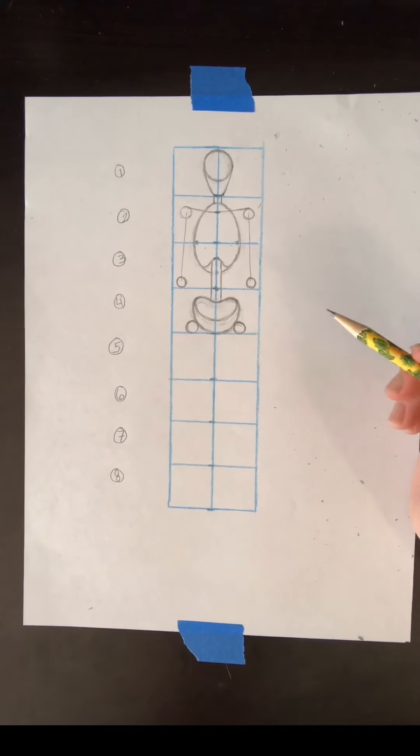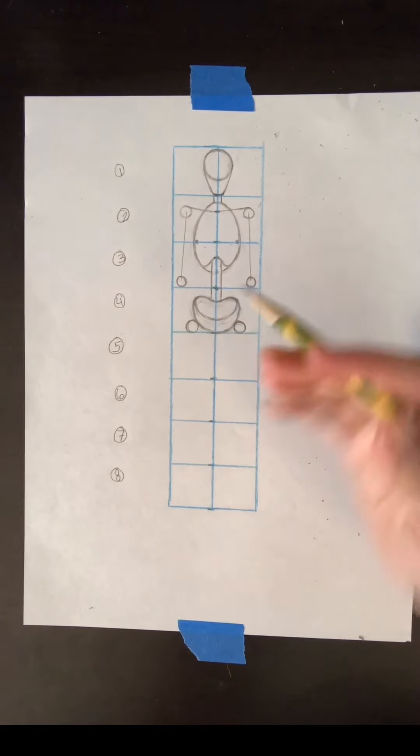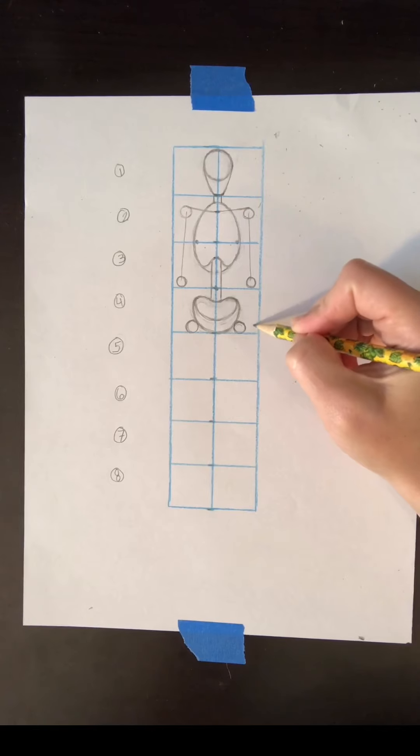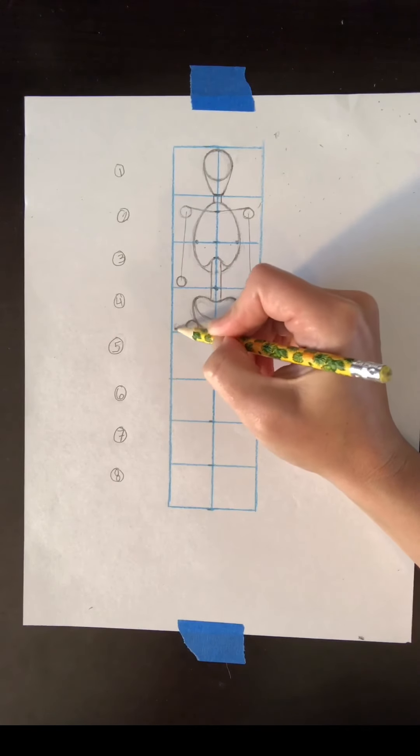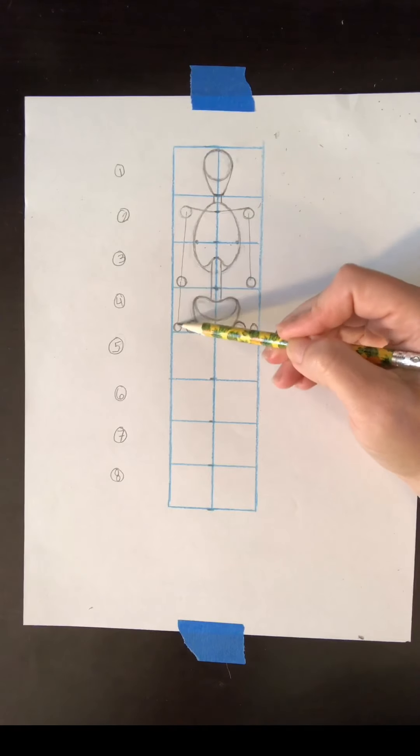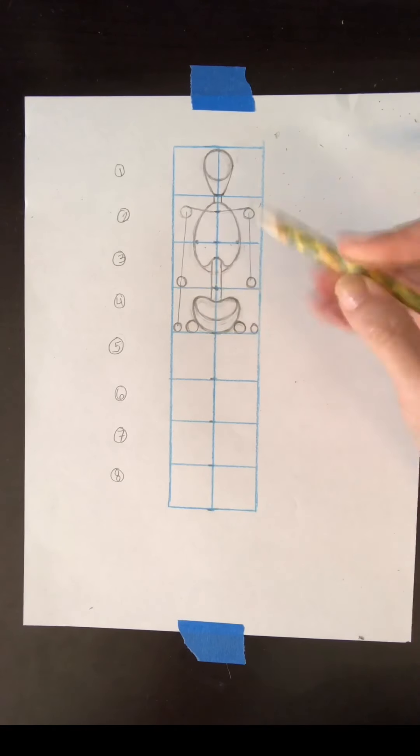And what also happens to fall at the midpoint of the human body is your wrists. So way out at the edge of your box so that we have room to put the legs in, you're going to put a smaller circle to indicate the wrist joint. And just like we did with the upper arm, we're going to connect the lower arm just with a straight line. So that's going to represent our two bones that are there, the major bones, the radius and the ulna.